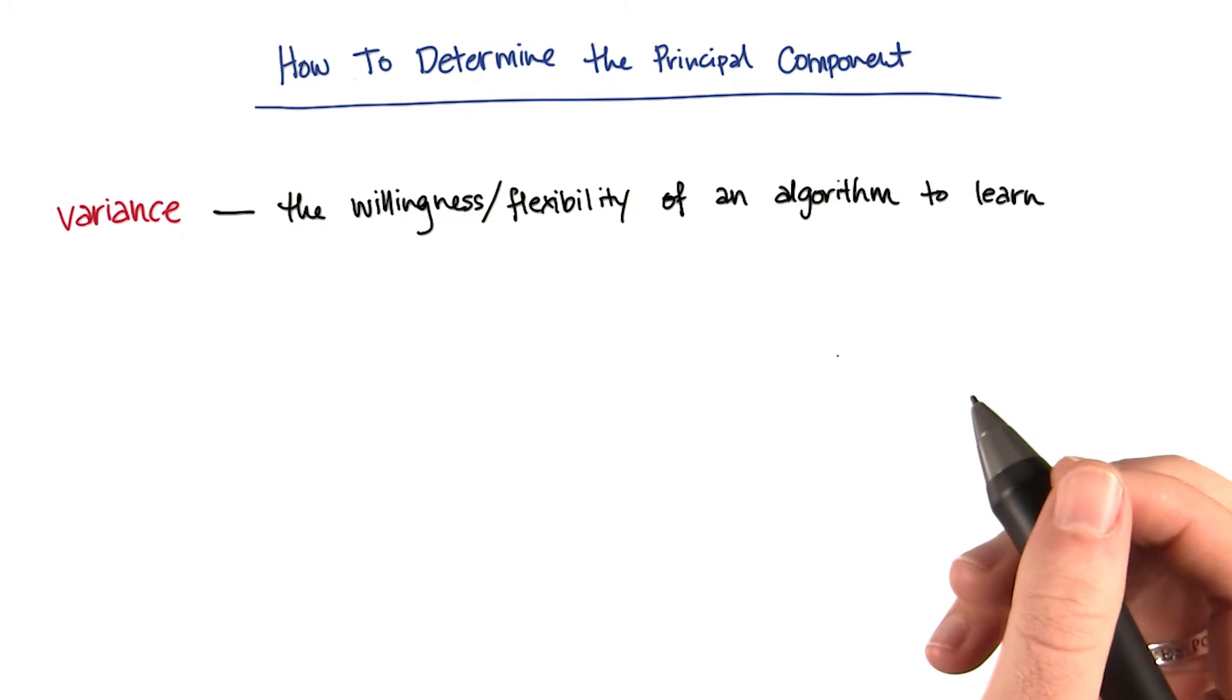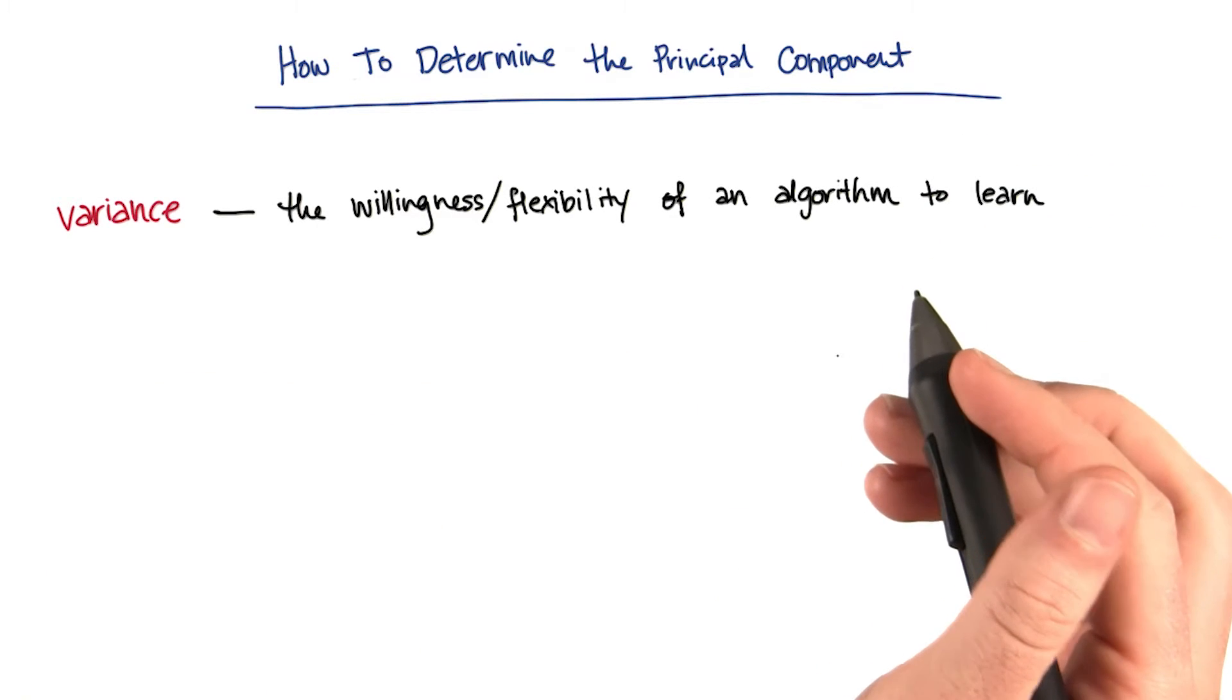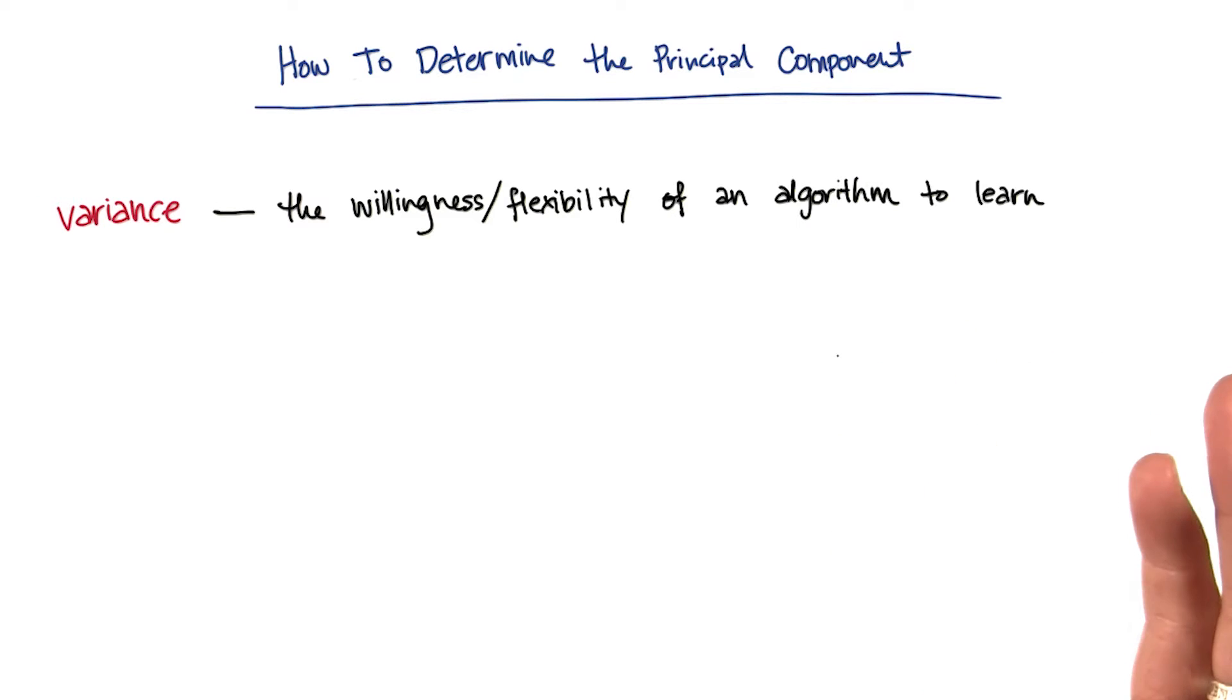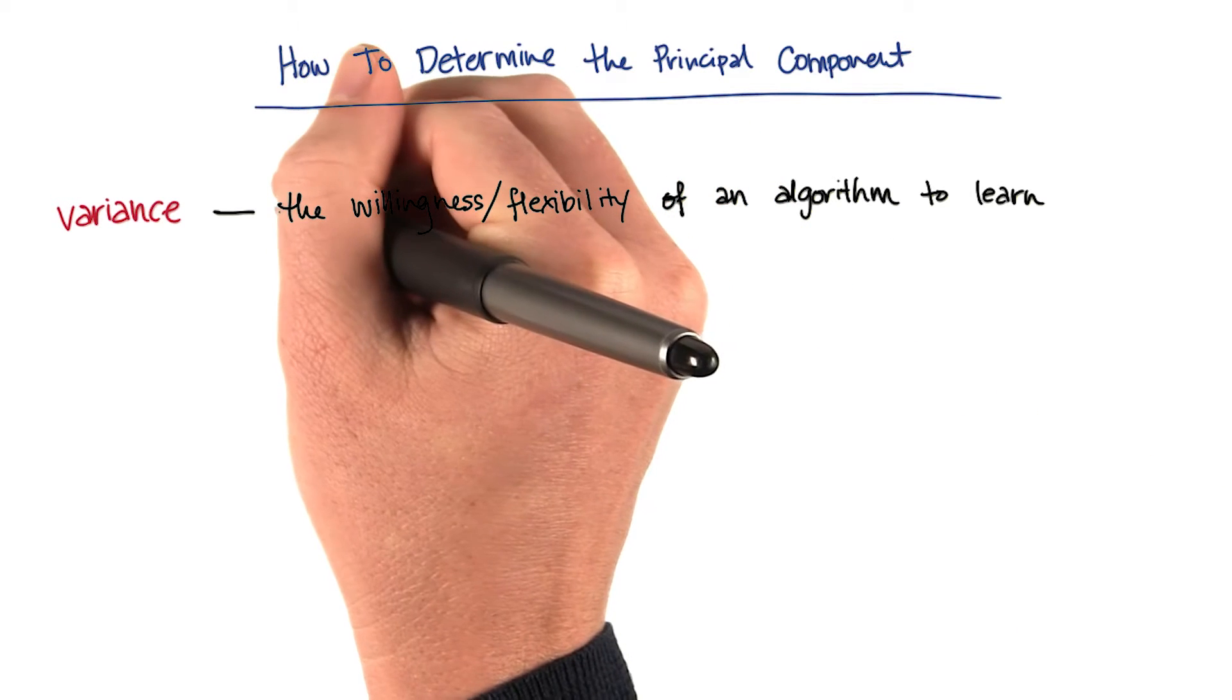First I want to start with a little bit of vocab. And the word is variance, which is a little bit confusing because you actually already know a definition of variance. It's a very important definition. It's the willingness or flexibility of an algorithm to learn. But we're going to mean it in a different sense.